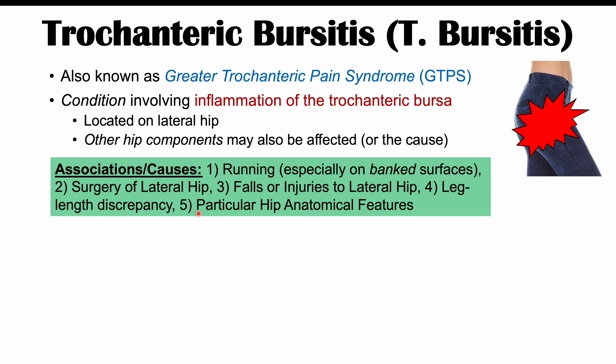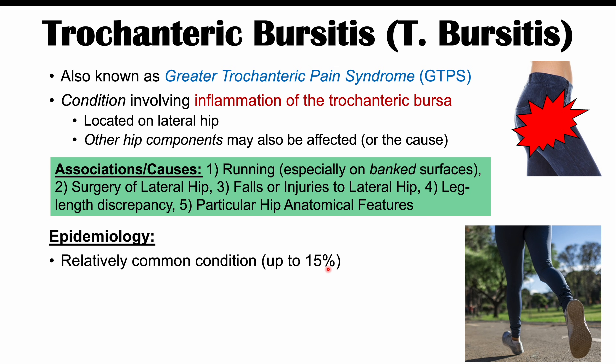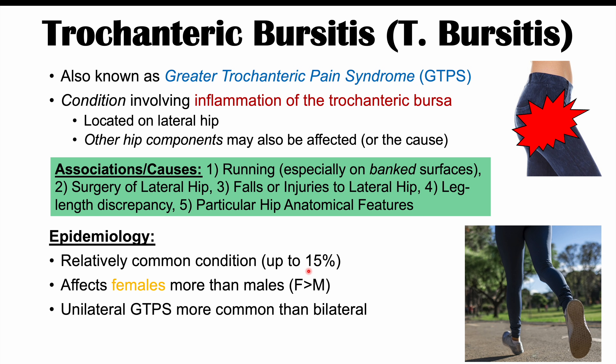Other hip anatomical features can also increase the likelihood of having this condition, including having a greater trochanter of the femur that is larger than average. Trochanteric bursitis is a relatively common condition, estimated to affect anywhere from 5 to 15% of the general population. Females are affected more than males, and this condition can be either unilateral or bilateral — meaning one-sided or both sides.